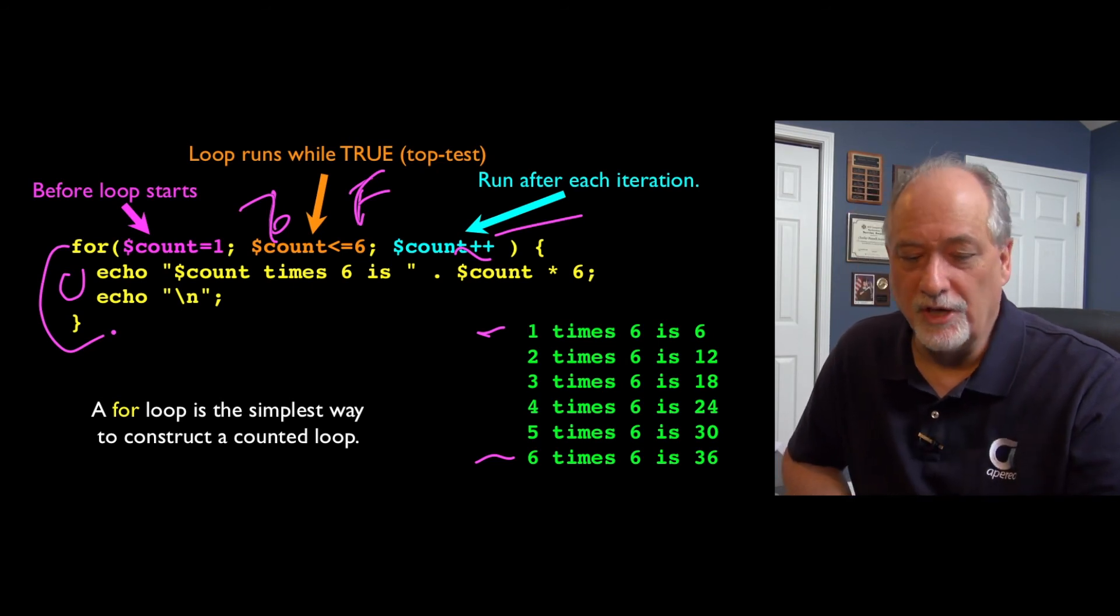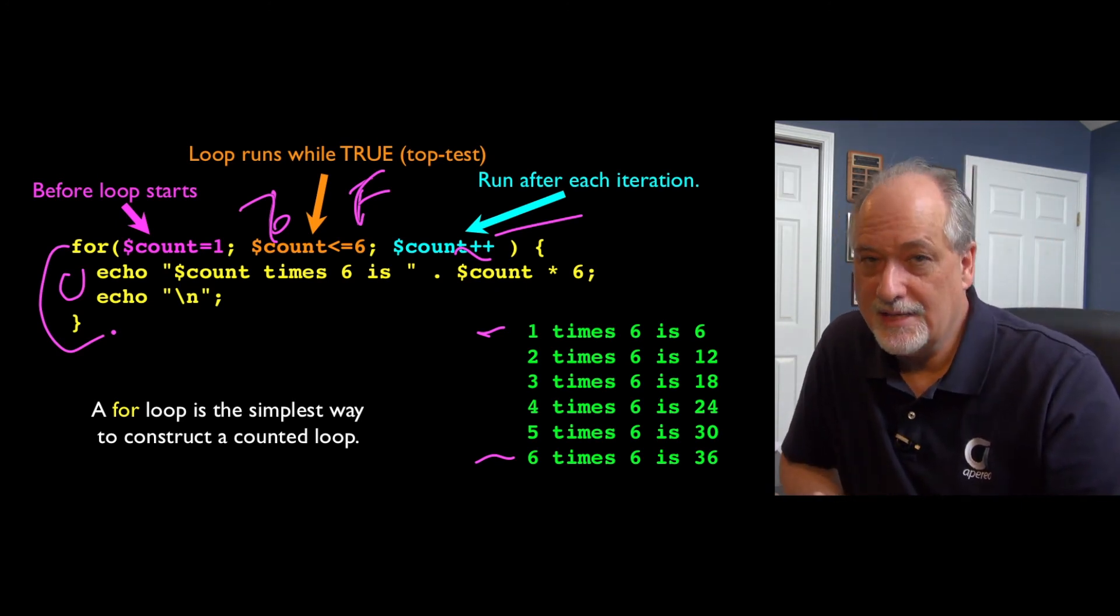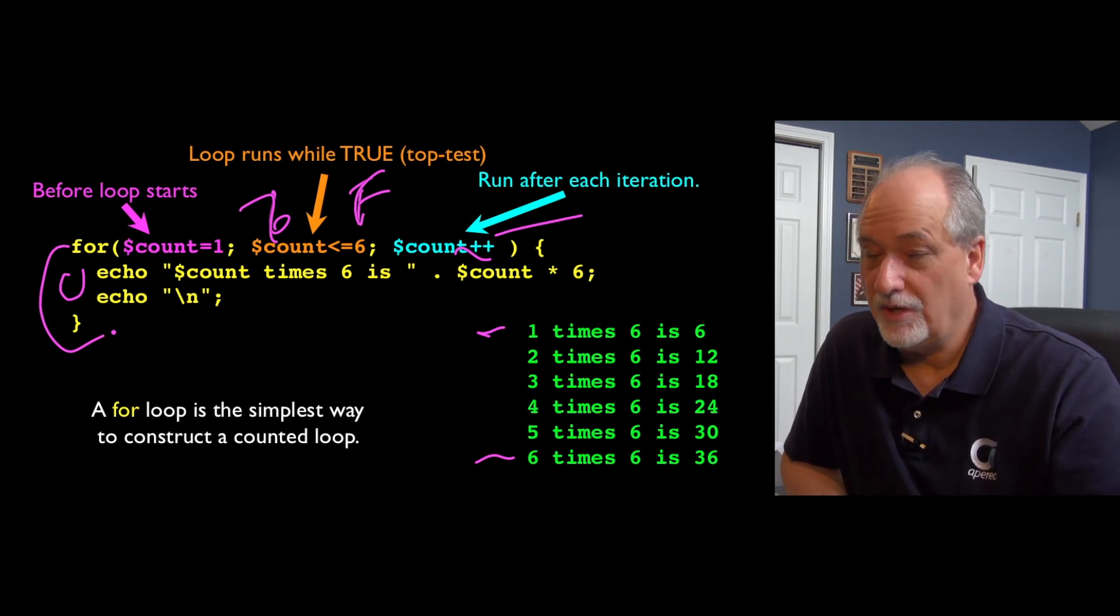There is a for each loop, which we'll see in the next section. We talk about arrays that is a non-counted loop that goes through all the items of things. That's a very nice loop, but sometimes you do need a counted loop.